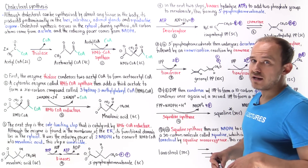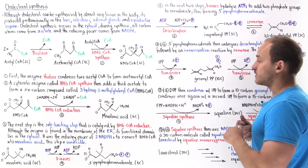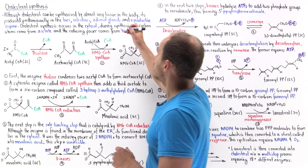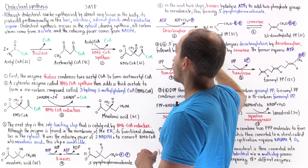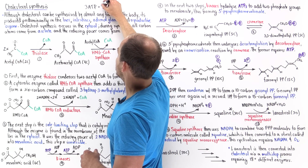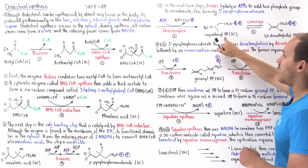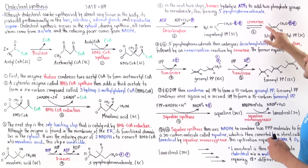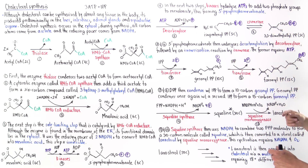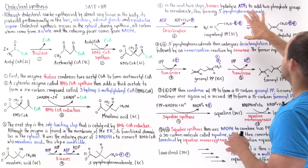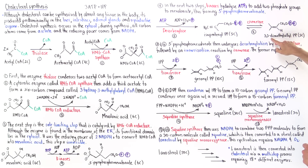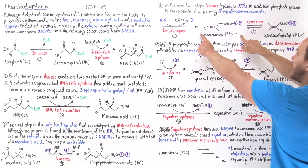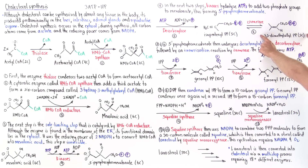So far we've used three ATP molecules to form a single IPP — isopentanyl pyrophosphate. Next, we have an enzyme known as isomerase, which converts it to a different isomer: 3,3-dimethylallyl pyrophosphate, also called DPP. So we have IPP and DPP as our two five-carbon isomers.